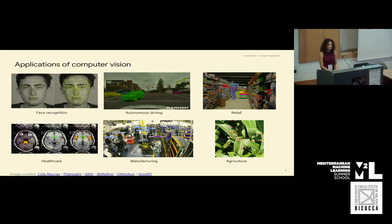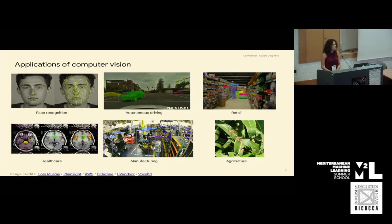When we look into the applications of computer vision, it's applied in quite a wide range of domains. One of them could be face recognition, which is used in many smartphones today for authentication. Another one is autonomous driving, in which computer vision is usually used for detecting objects — like in this image, cars have been detected — or it could be pedestrians, or lane detection to make sure that the vehicle is on the right track.